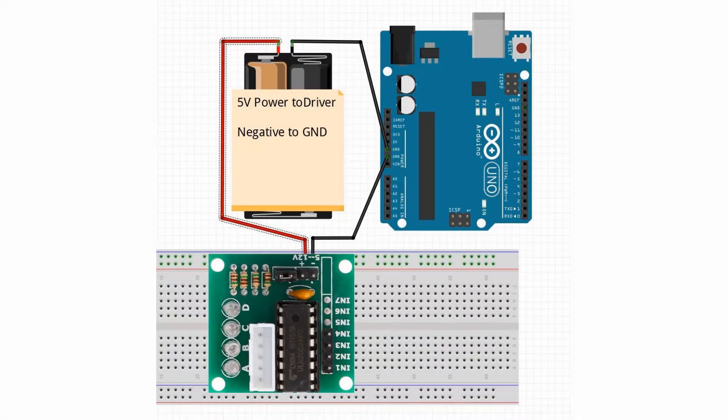Now we need an external power supply. Connect the 5 to 12 volts max into the board and the ground into the arduino. As well, the board ground to the arduino.